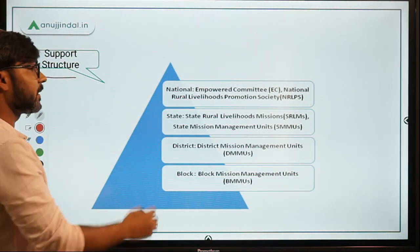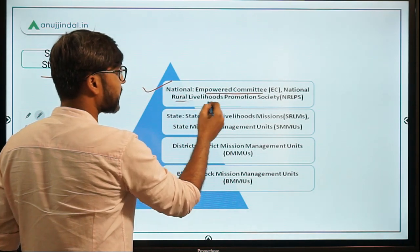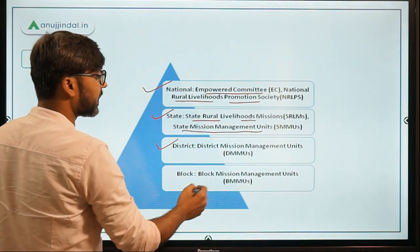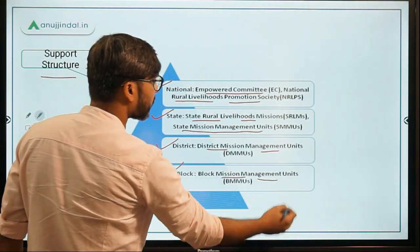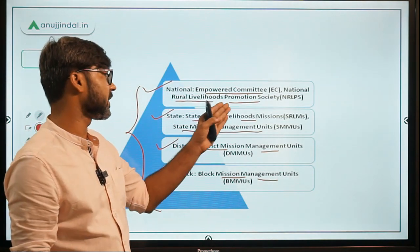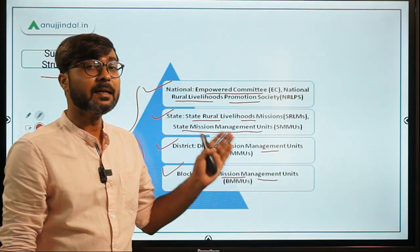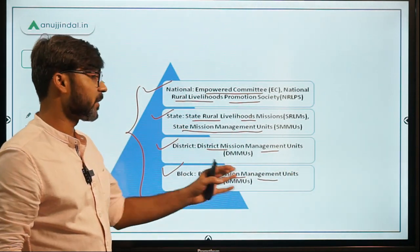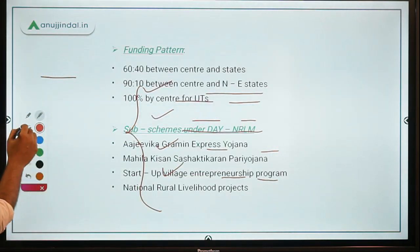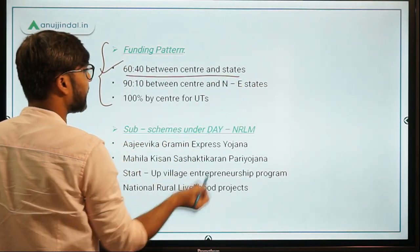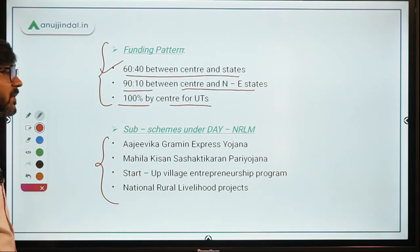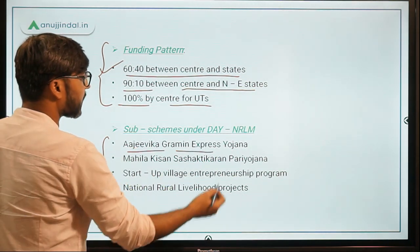The support structure is as follows: at the national level there is an empowered committee known as the National Rural Livelihoods Promotion Society; at the state level there is the State Rural Livelihood Mission and State Mission Management Units; at the district level there are District Mission Management Units; and at the block level there are Block Mission Management Units. The funding pattern is 60:40 between centre and state, 90:10 between centre and northeastern states, and 100 percent by the centre for Union Territories.